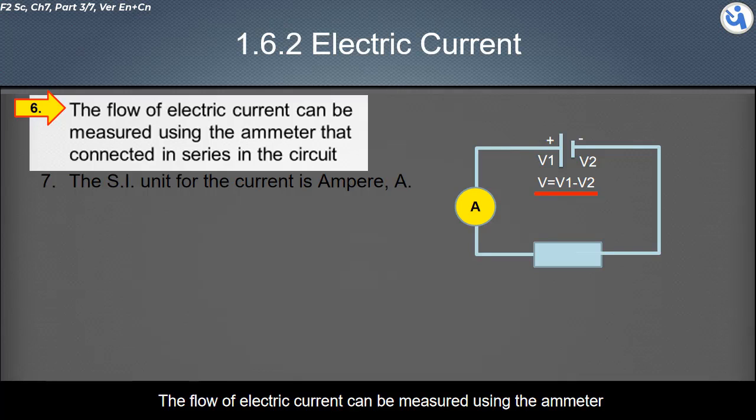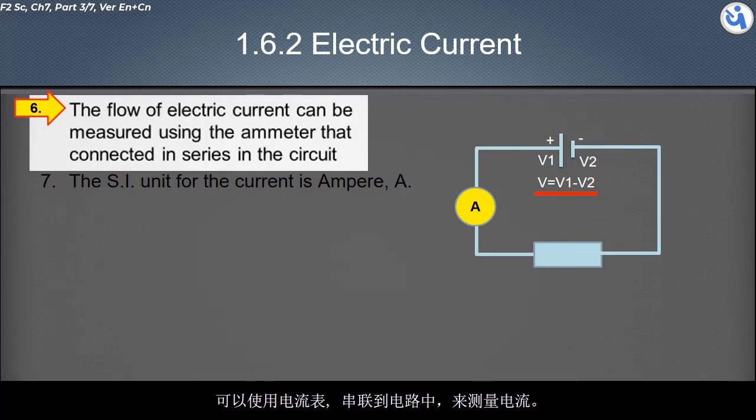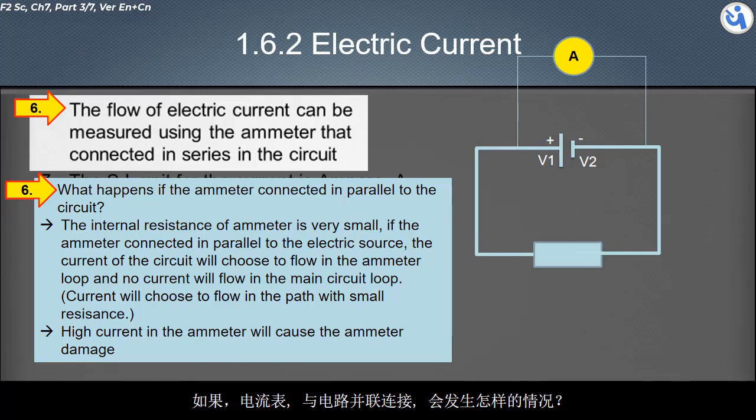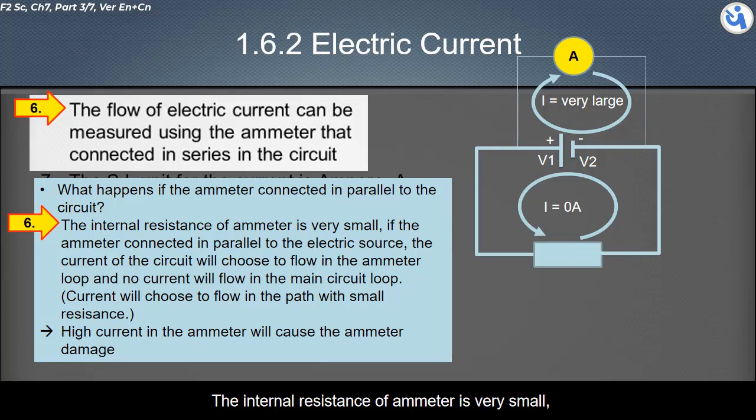The flow of electric current can be measured using the ammeter that is connected in series in the circuit. What happens if the ammeter is connected in parallel to the circuit? The internal resistance of ammeter is very small. The current of the circuit will choose to flow in the ammeter loop, and no current will flow in the main circuit loop.